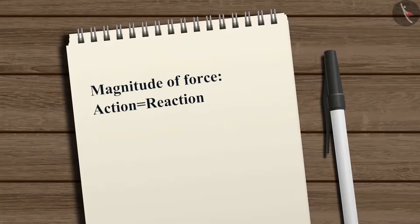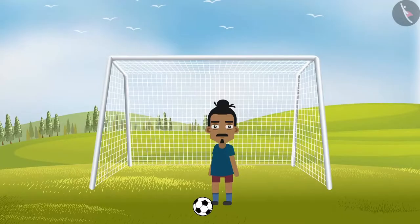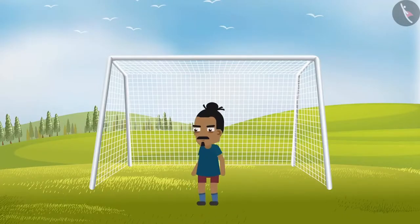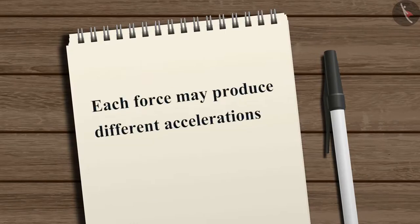Even though action and reaction forces are always equal in magnitude, they may not always produce accelerations of equal magnitude. This is because each force acts on a different body with a different mass. According to the second law, F equals m multiplied by a, so the same force applied on different masses will produce different accelerations. Thus each force may produce different accelerations on different bodies.